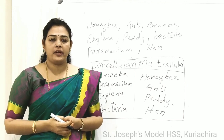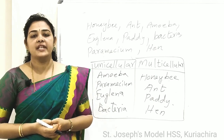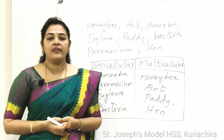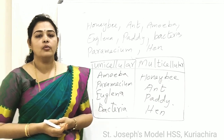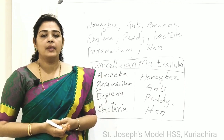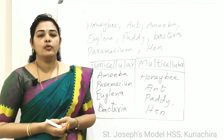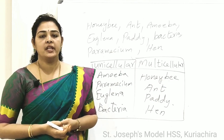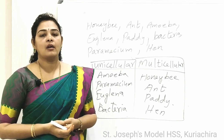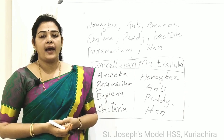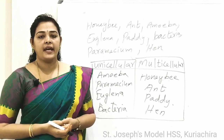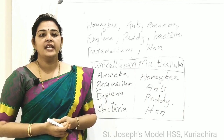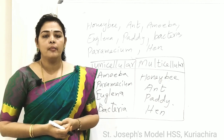Let us conclude our points. Cells are the basic structural unit of a living body. Organisms having one cell in their body are called unicellular organisms — examples: amoeba, paramecium, euglena, etc. Organisms having more than one cell are called multicellular organisms — examples: plants, animals, human beings, etc. Can we see microorganisms with the naked eye? No, we cannot. They can be observed only through the microscope.